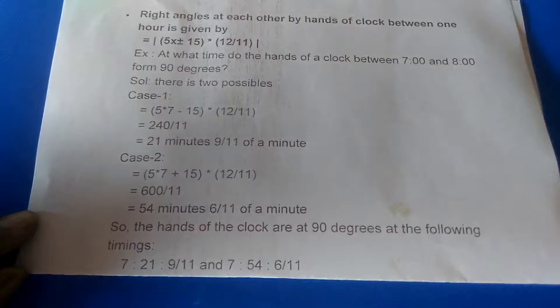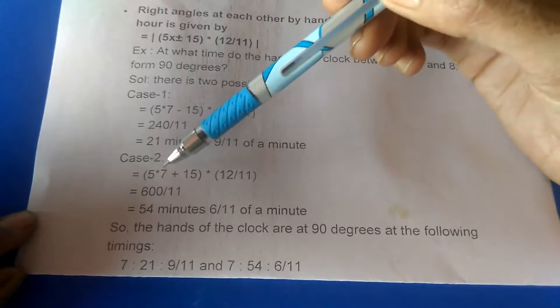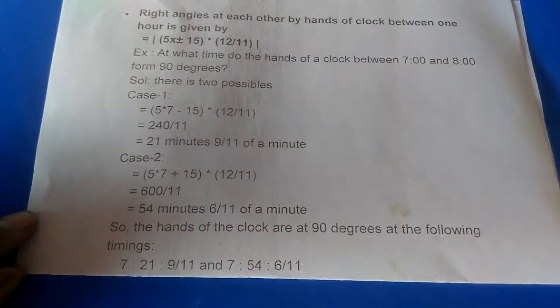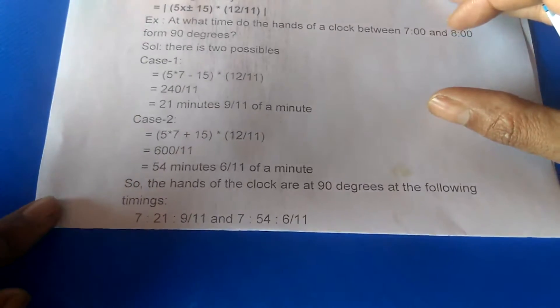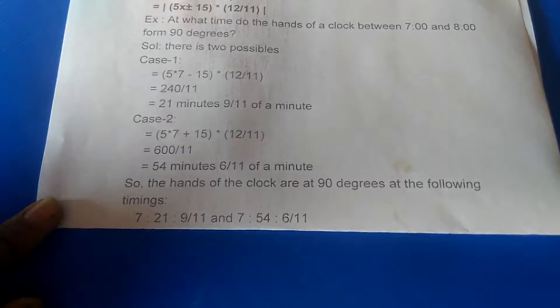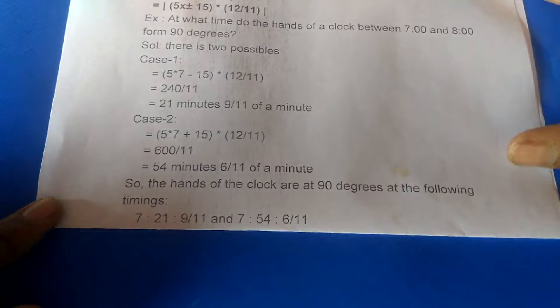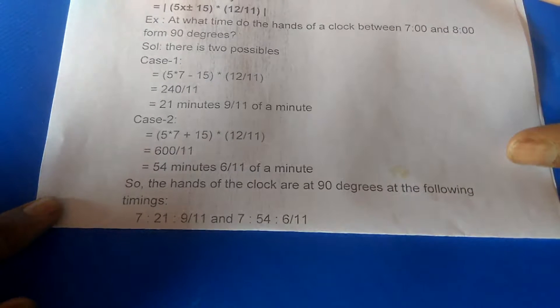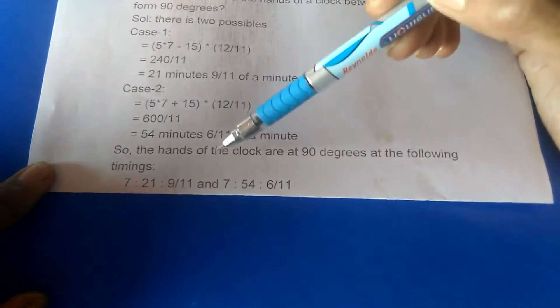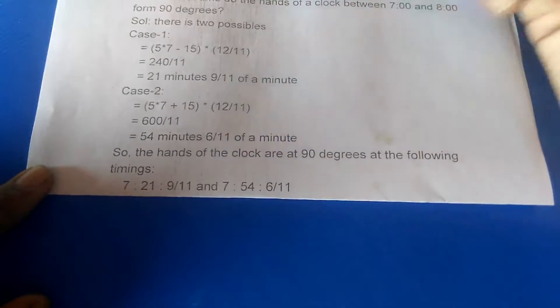Case number 2, the plus case: 5 times 7 plus 15 times 12 over 11 equals 600 over 11, which equals 54 and 6 by 11 minutes. So the hands of the clock are at 90 degrees at the following times: 7:21 and 7:54.